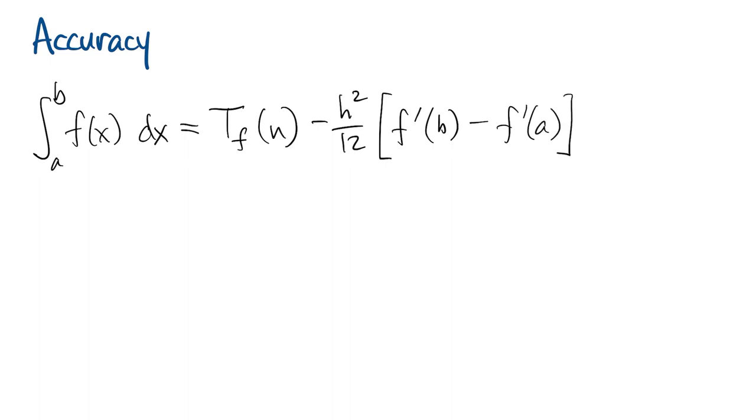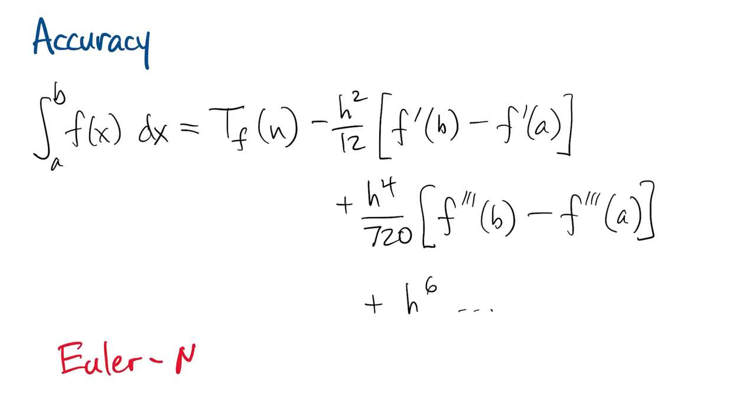It's possible to analyze the accuracy of the trapezoid formula using only tools you already know, but I can't resist showing off this formula, which is one of my favorites. It says that the exact integral is given by the trapezoid formula plus an infinite series of corrections. The first in the series is a multiple of h squared, the second is a multiple of h to the fourth, and so on. This is called the Euler-Maclaurin formula. It's not easy to prove, but it is a beautiful result.